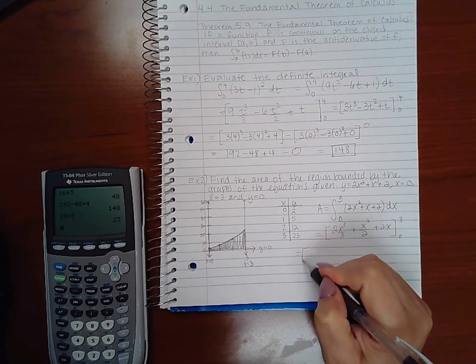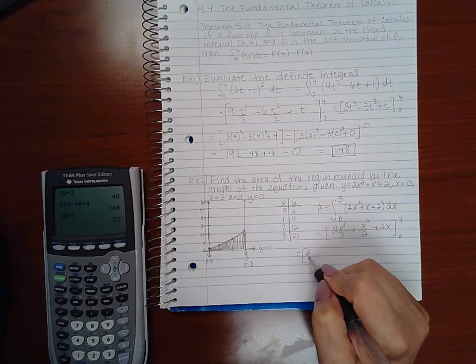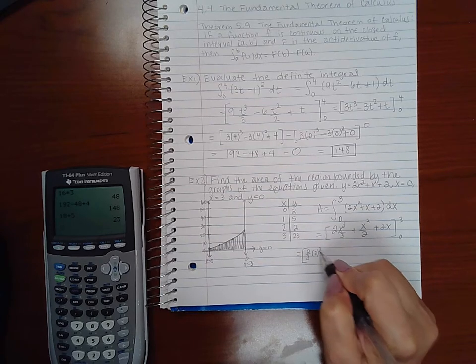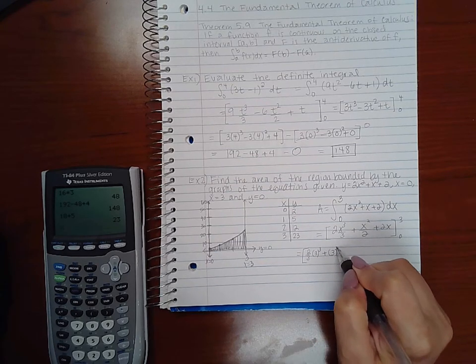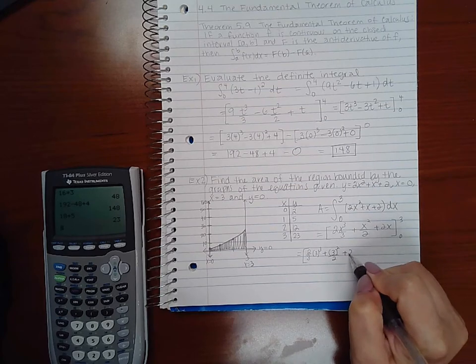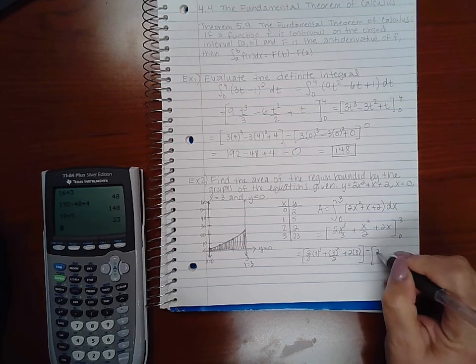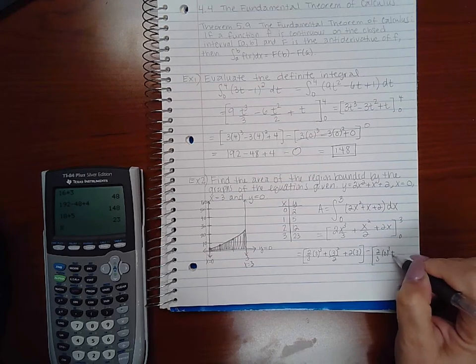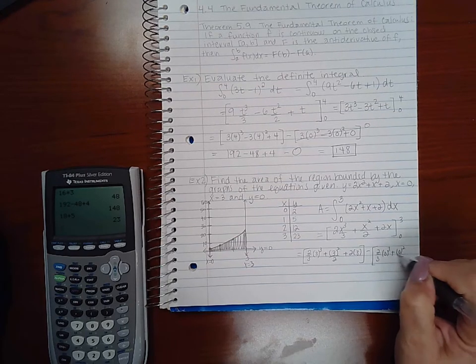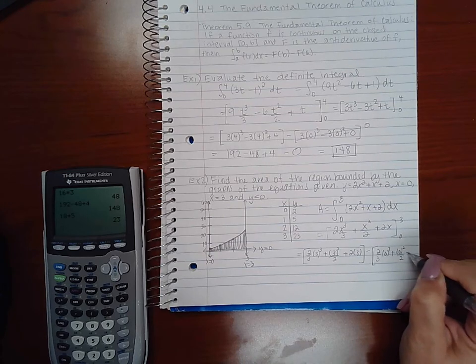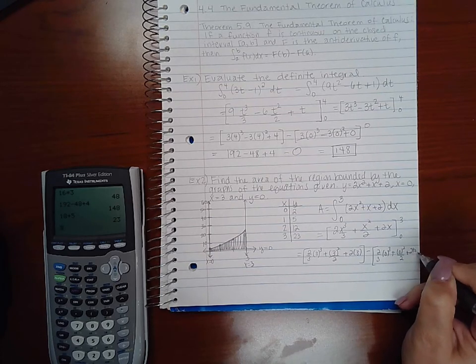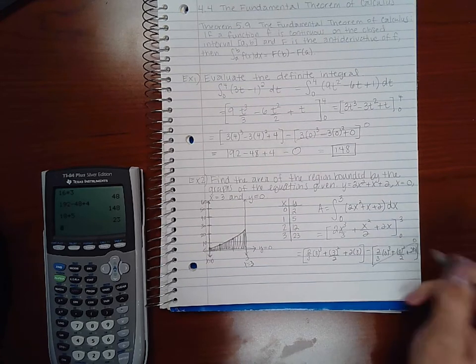So first, I have to plug in 3. So I get 2 thirds times 3 cubed plus 3 squared over 2 plus 2 times 3 minus whatever I get when I plug in 0. Now this doesn't always come out to be 0. Most times it does, but in this case, all of these guys are 0 again.